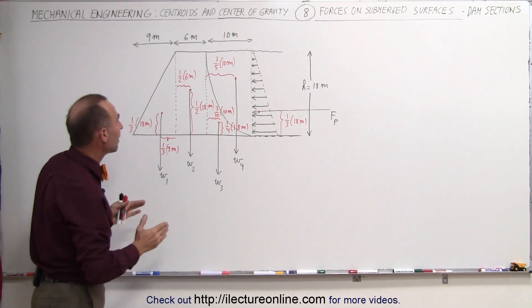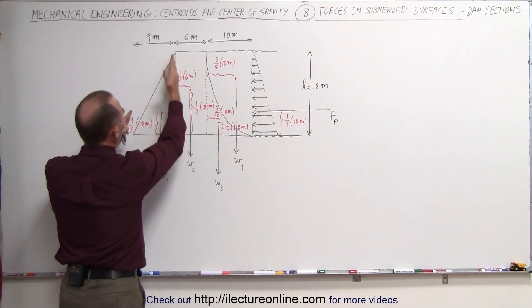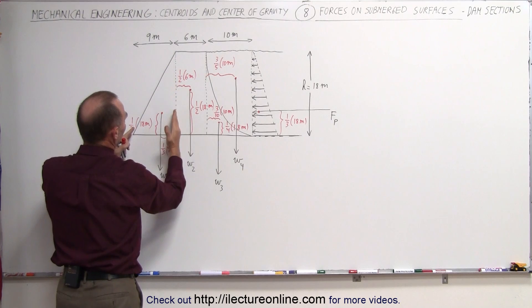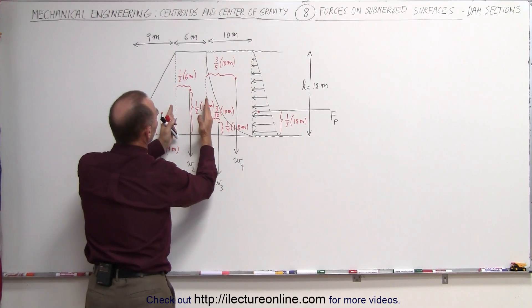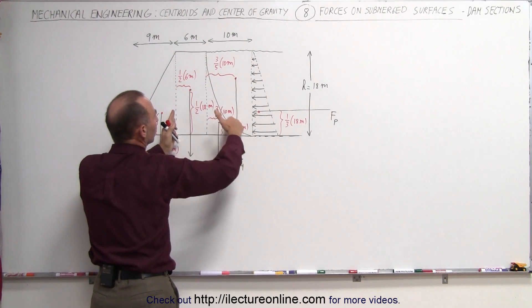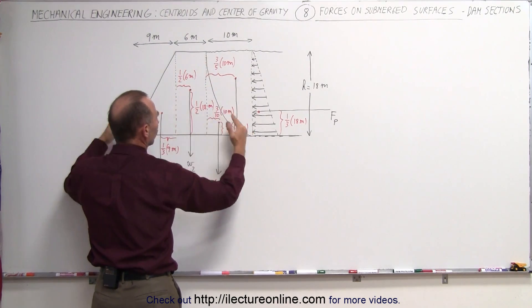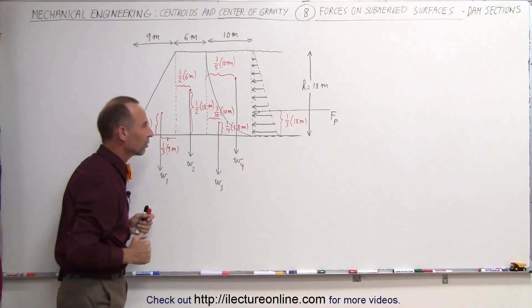We can then take the dam and divide it into three sections: the triangular portion section here, the rectangular portion section here, and the parabolic section here — but it's all one solid piece of concrete.